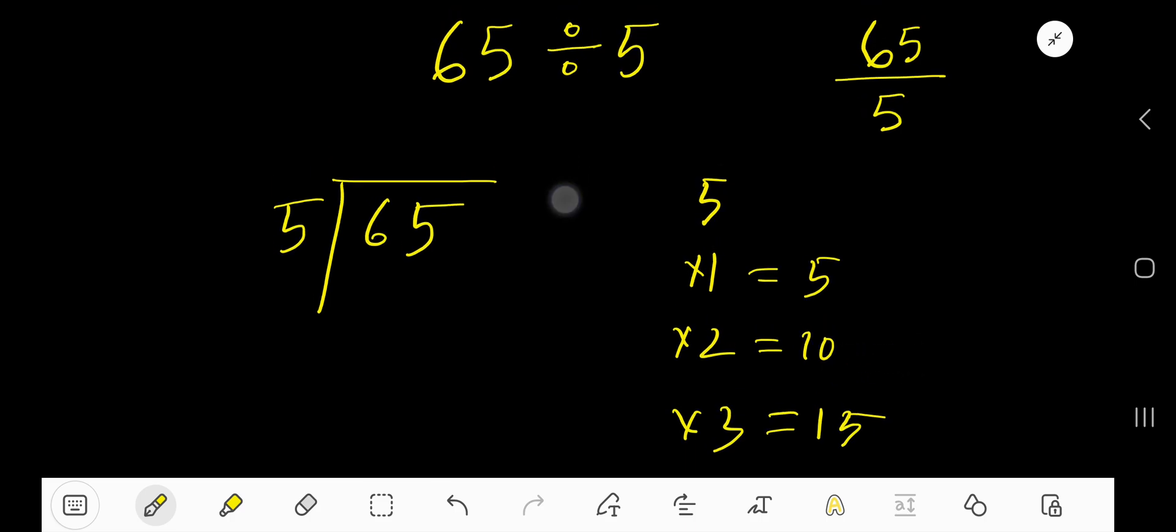Now look, 5 goes into 6 how many times? We can consider here 1 times. 1 times 5 equals 5. If you subtract then you are getting 1. Bring down this 5. 5 goes into 15 how many times?